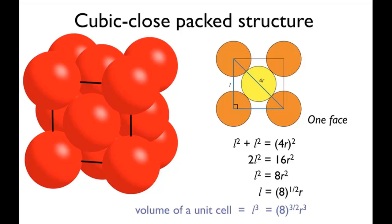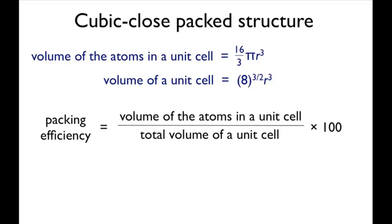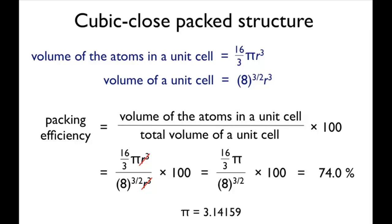The volume of the cell is l cubed, so equal to the square root of 8 cubed multiplied by r cubed. You can now put the expressions for the volume of the atoms and the volume of the unit cell into the equation for packing efficiency. The cube of the radius is on both the top and the bottom of the equation, so cancels out. Putting the numbers in gives a value of 74% for the packing efficiency.